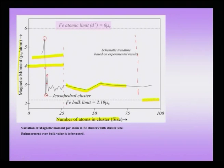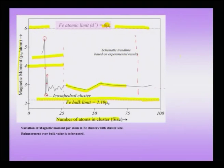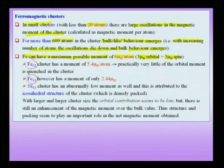After about 25 atoms, the variation with cluster size gets smoother. In the bulk regime, the variation becomes even smoother and bulk behavior emerges — iron in the large crystal regime approaches a magnetic moment of about 2.2 μB per atom. The lower limit on this graph is the bulk limit and the upper limit is the atomic limit of about 6 μB. Importantly, all magnetic moments noted in the graph are above the bulk limit, meaning there is an enhancement in the magnetic moment in the nano crystalline, large cluster, and small cluster regimes.